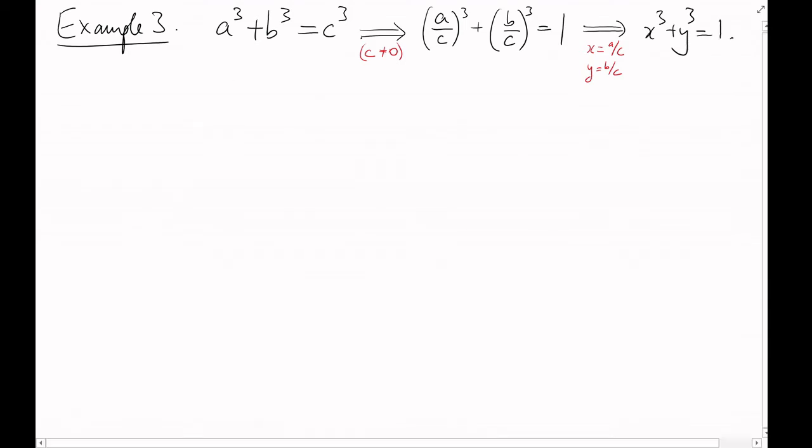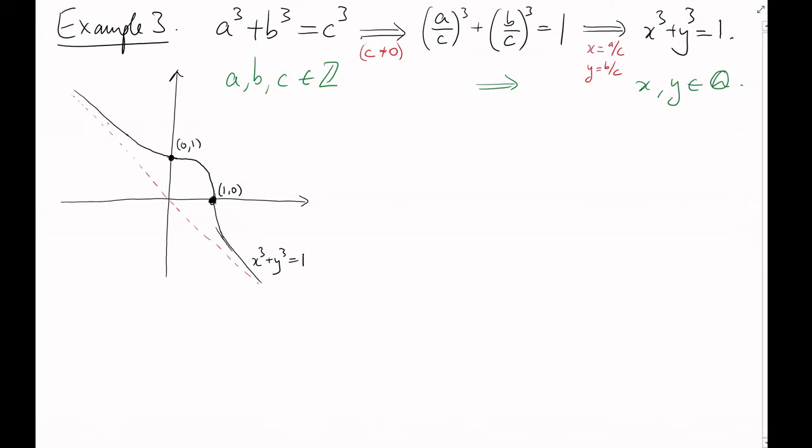And integer values of a, b, and c give rational values of x and y. The graph of this curve looks like this. It approaches the line y equals minus x in both directions, and it contains these two trivial solutions, 1,0, and 0,1. Again, it's a cubic curve, so most of the time a line going through two points will actually go through three.